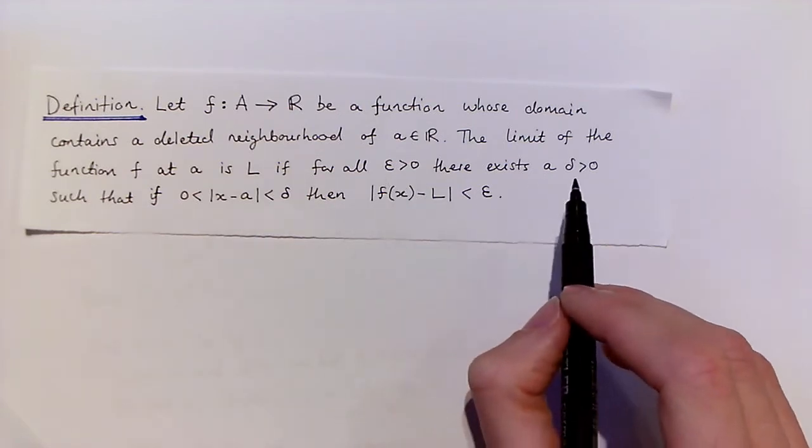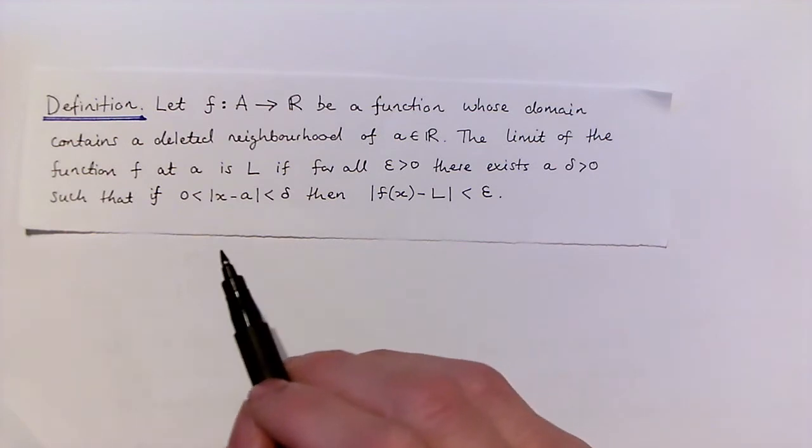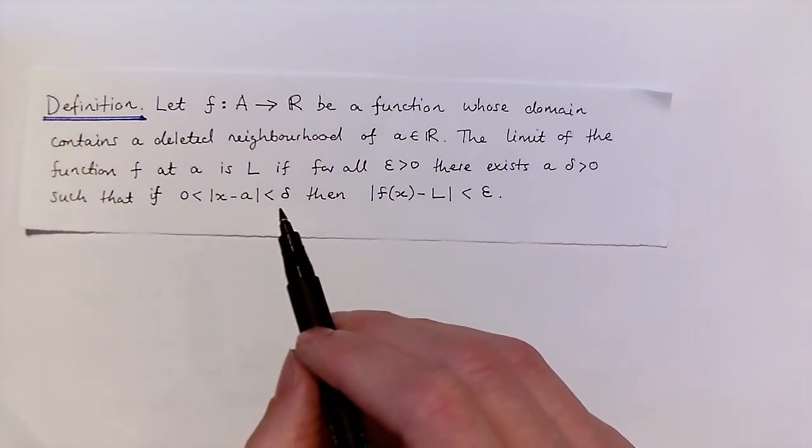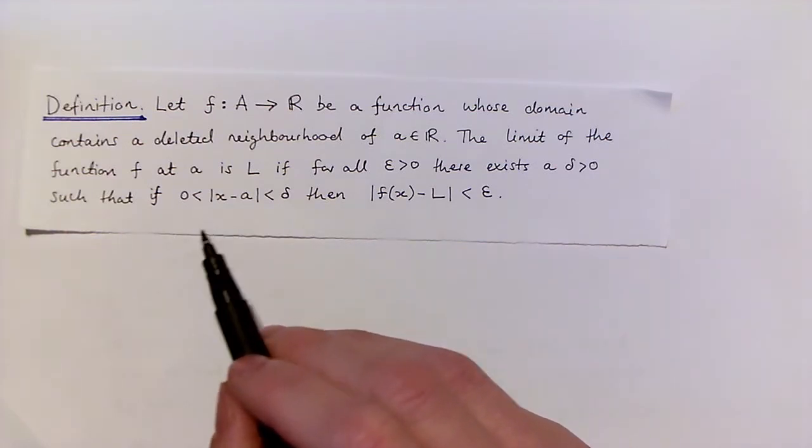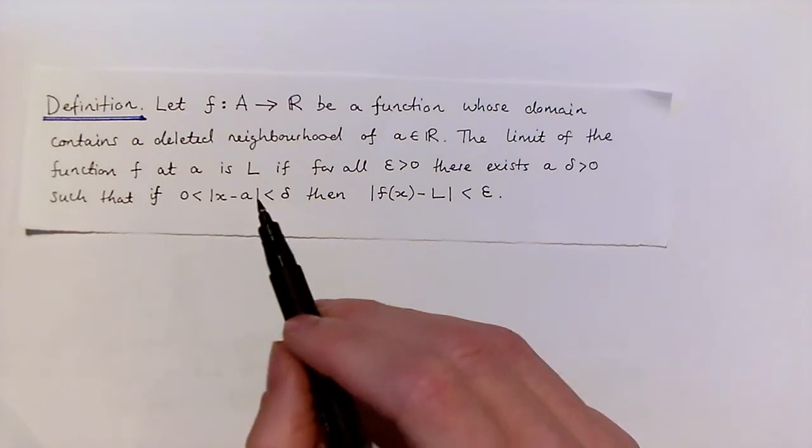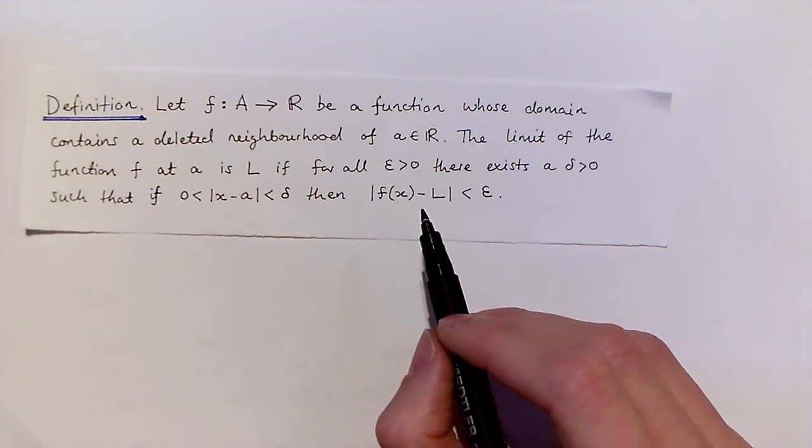we can find a positive number delta, such that for all x which lie within delta of a, but which are not equal to a, we have the distance between f(x) and l is less than epsilon.